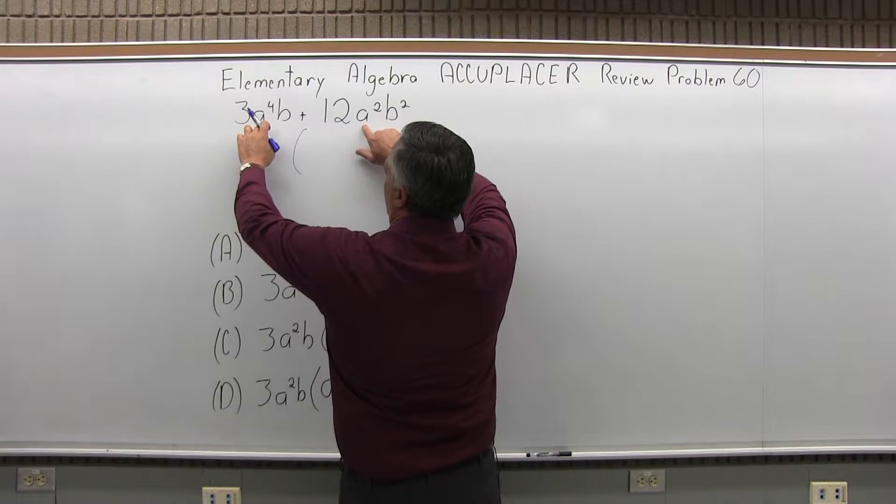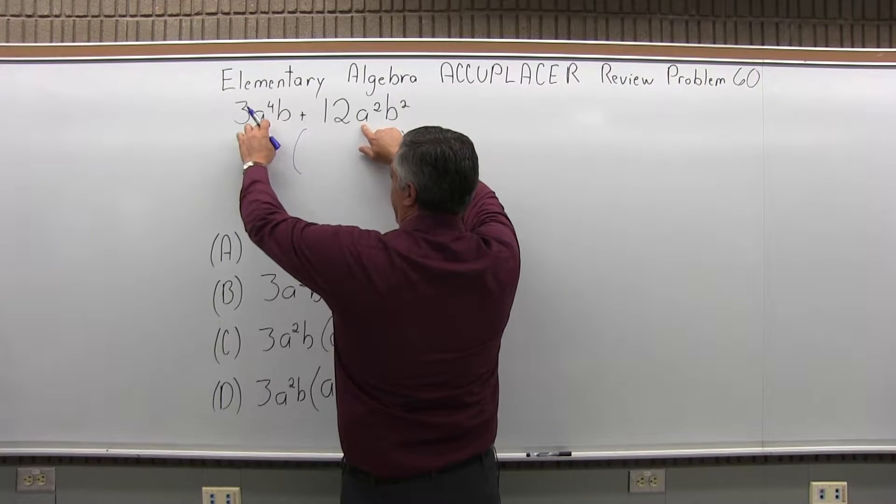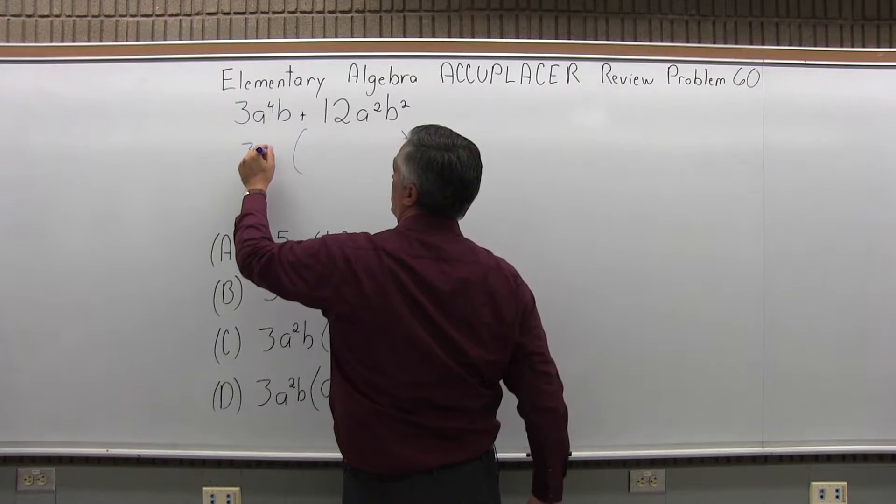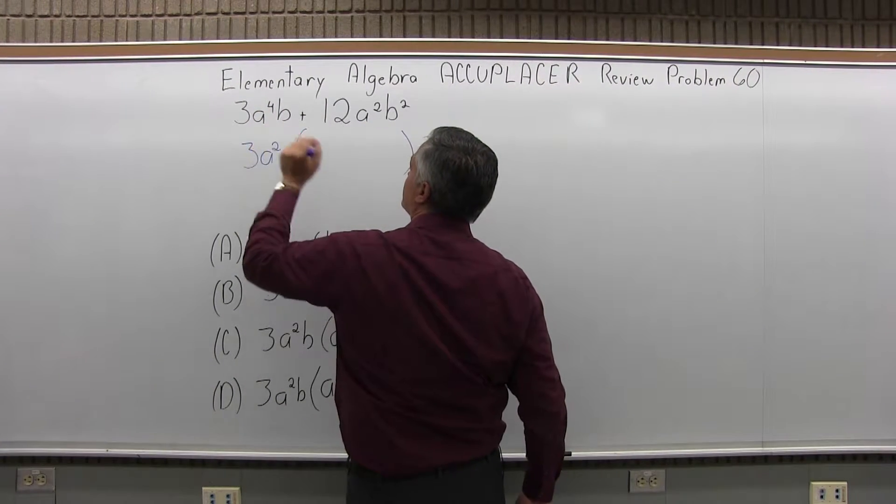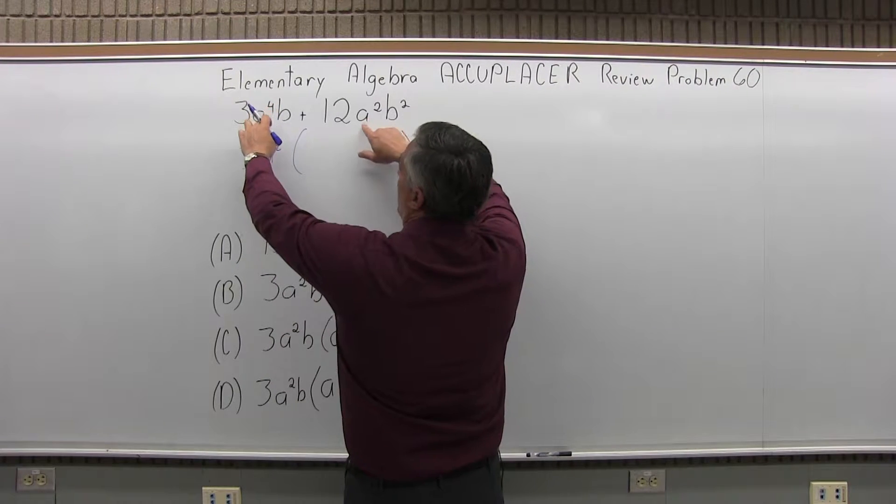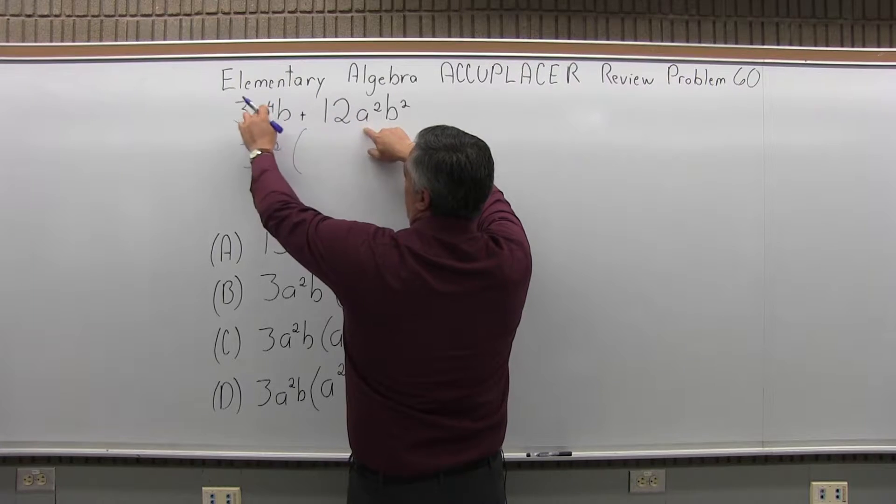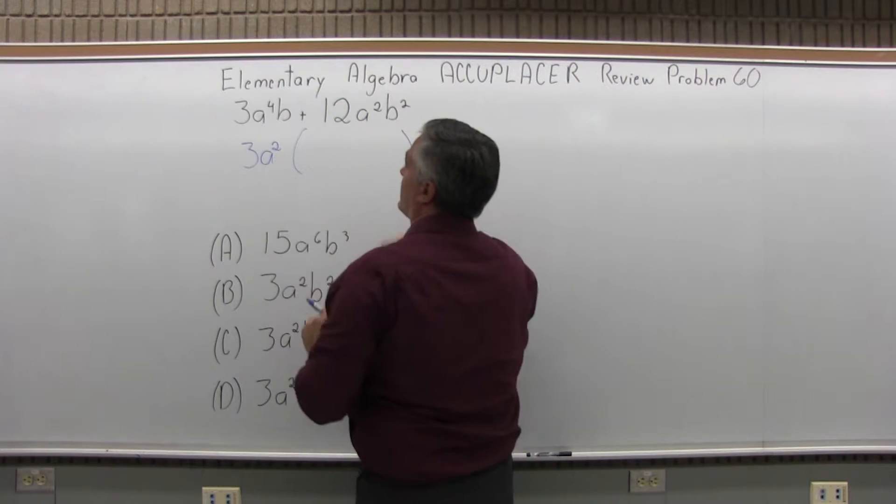Move on to the first variable now, which is the A's. I have an A to the fourth and an A to the second. I want to take out as much as I can from both. A to the second is as big as I can go with both of them. Certainly more will come out of A to the fourth, but to take it out of both, A to the second is as big as I can go.